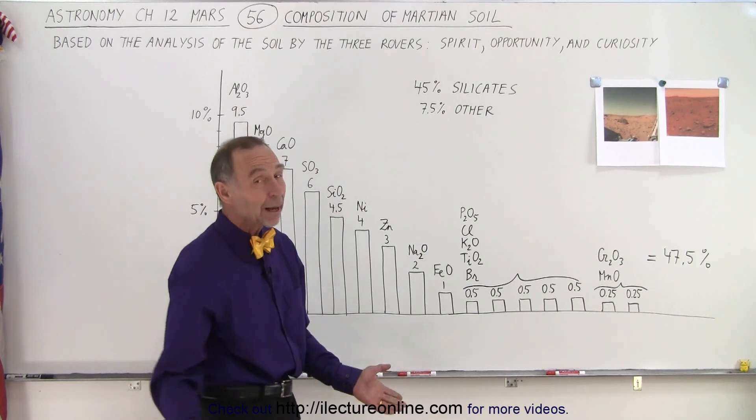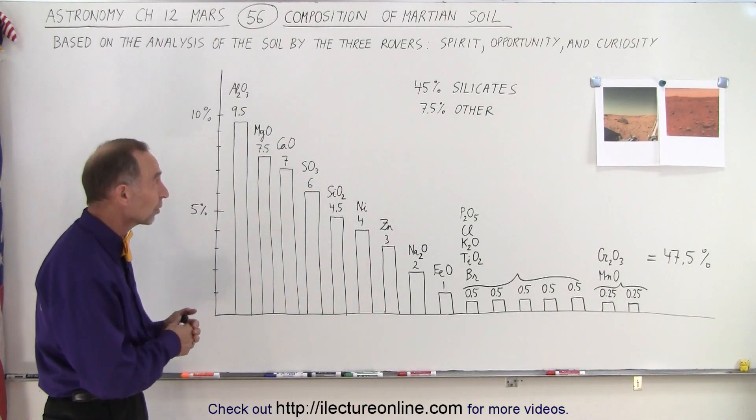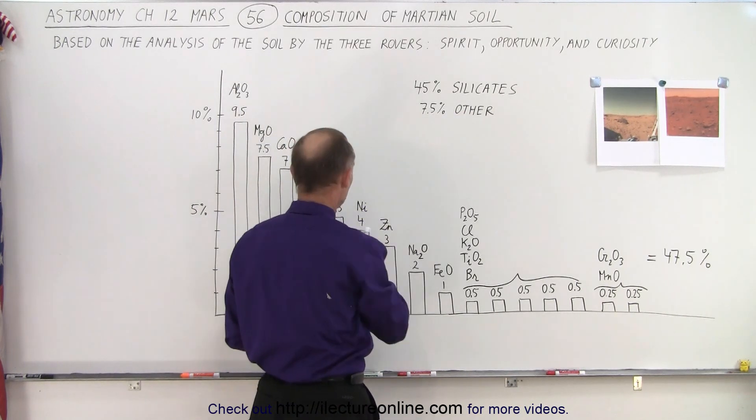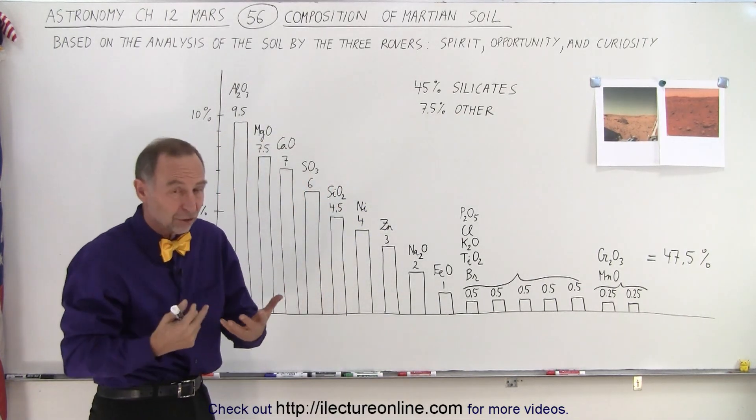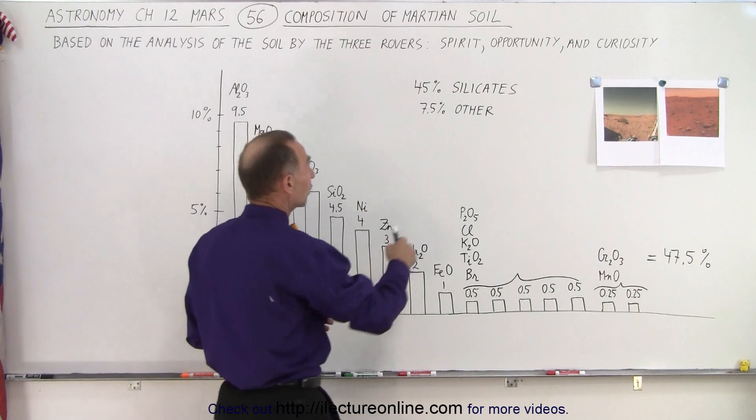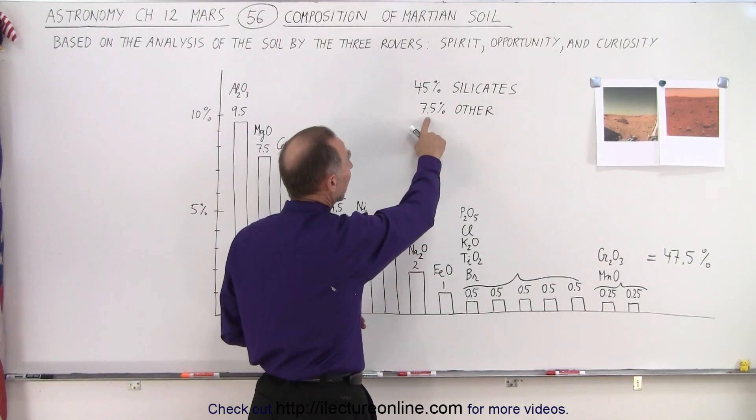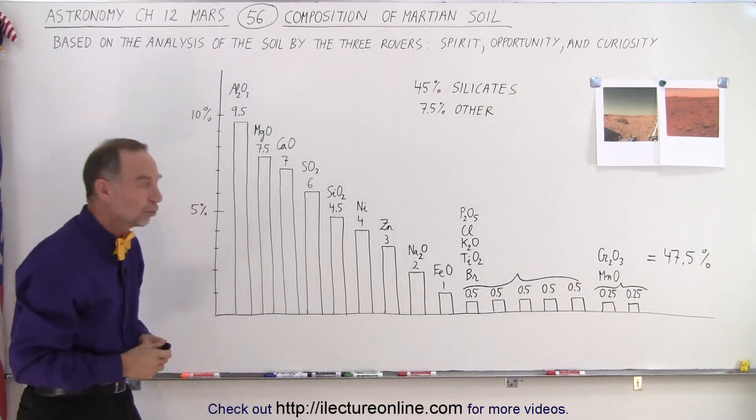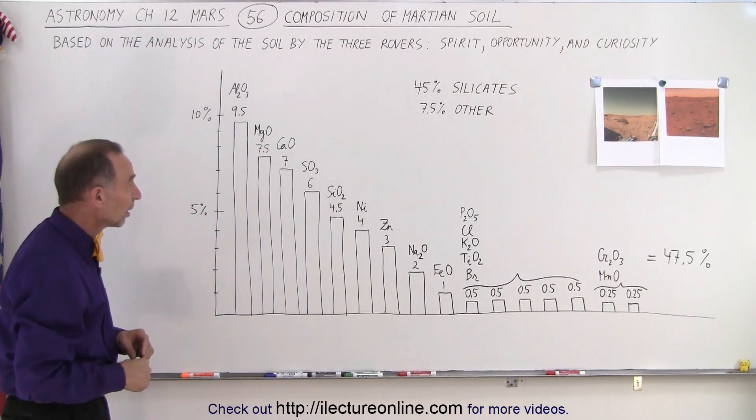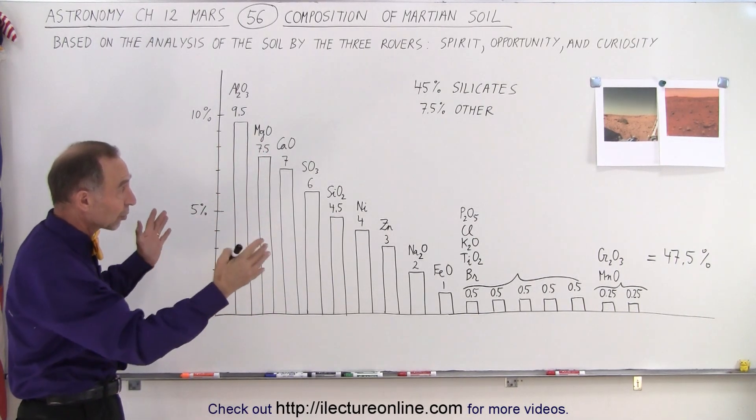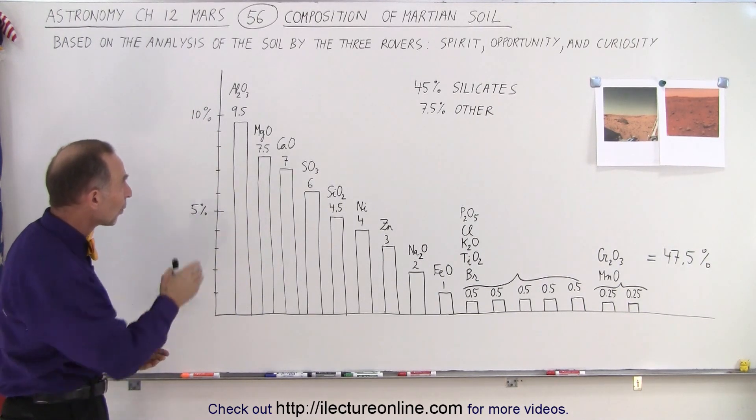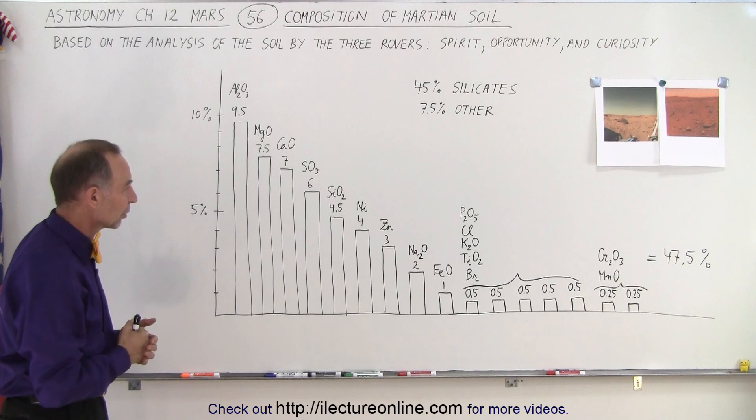So that makes up about half of the Martian soil. The rest of the soil was made up of 45% silicates, which is what we expect because that's the main constituent of planetary crusts. And then we have 7.5% of other elements in very small quantities that are too small really here to list. But that gives you a pretty good idea that there's a cross section of three different sites on the surface of the planet where these were found in those particular quantities.